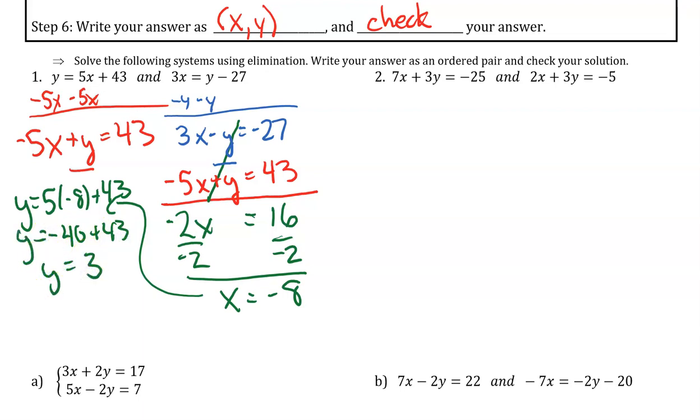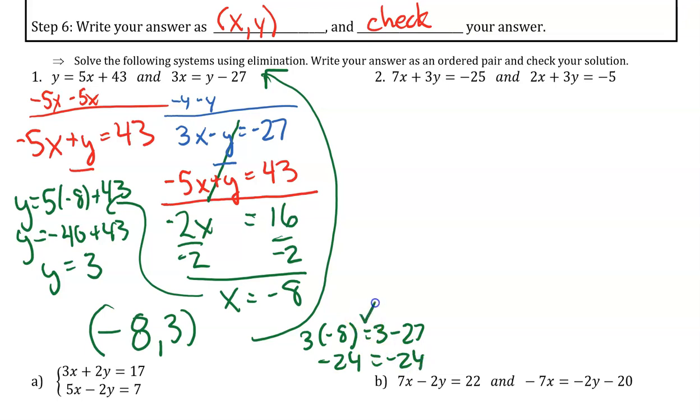So I have a coordinate pair, negative 8 comma 3. I'm going to take those values and now I'm going to do my check. I'm going to go up to this equation. I'm going to say 3 times negative 8 should equal 3 minus 27. Negative 24 equals negative 24. So my check works out.